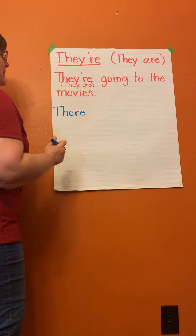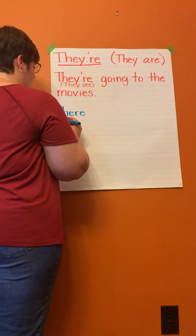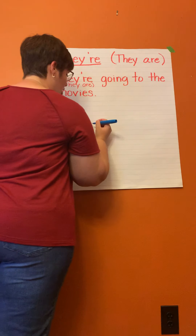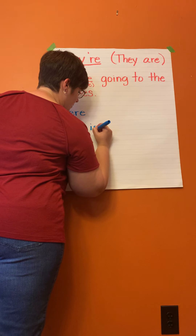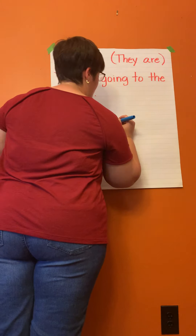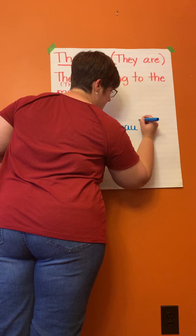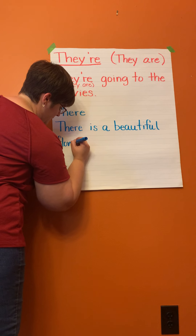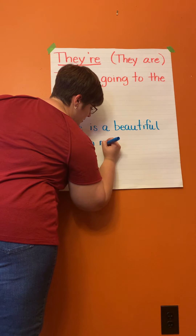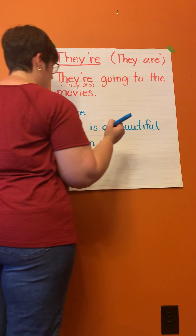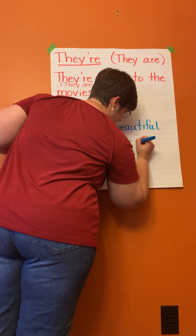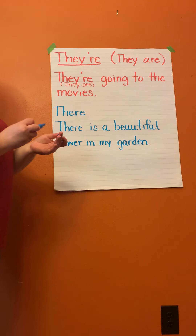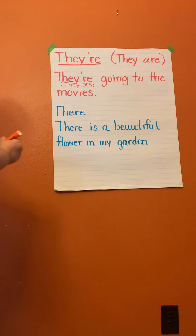This 'there' — let me give you a sentence as an example: 'There is a beautiful flower in my garden.' That is the correct use of that form of there. Now let's look at the last one.